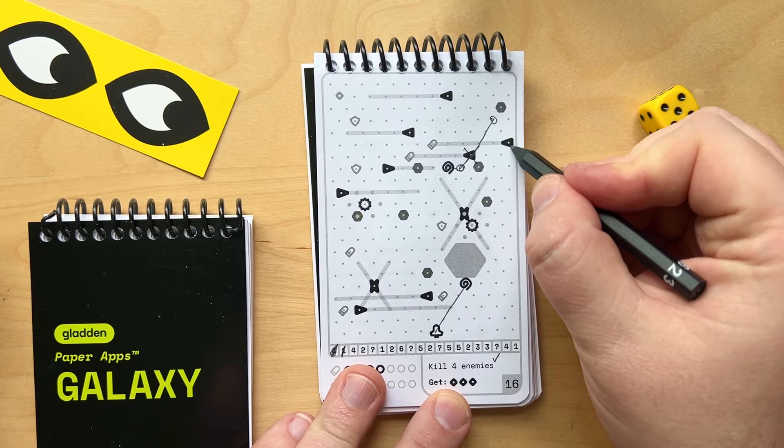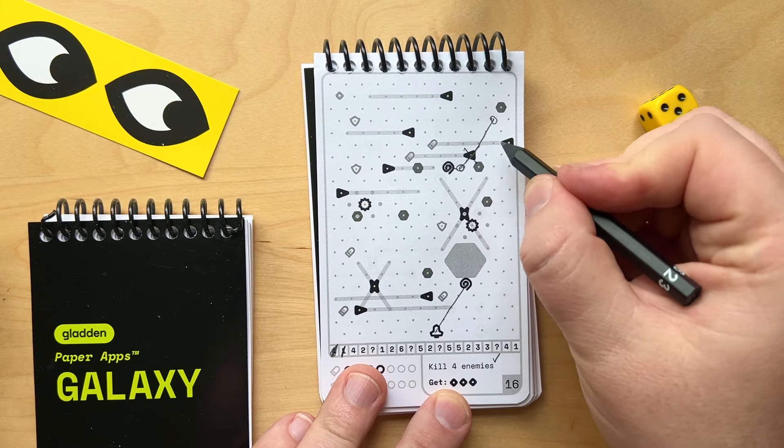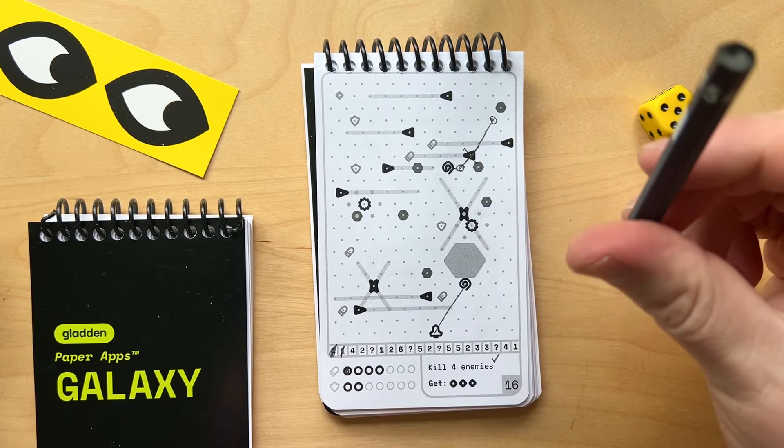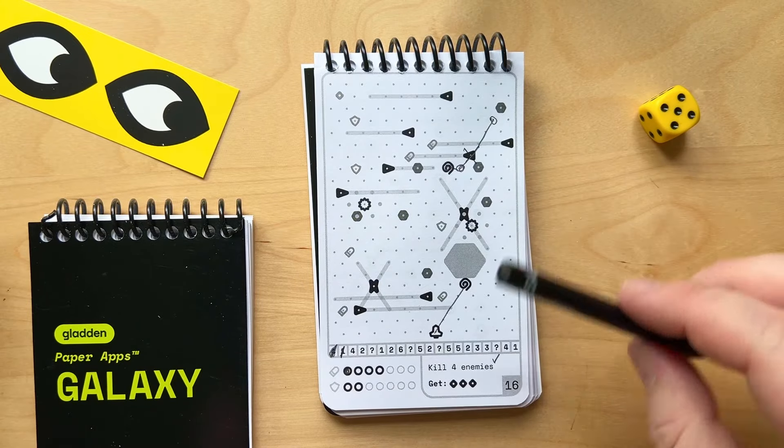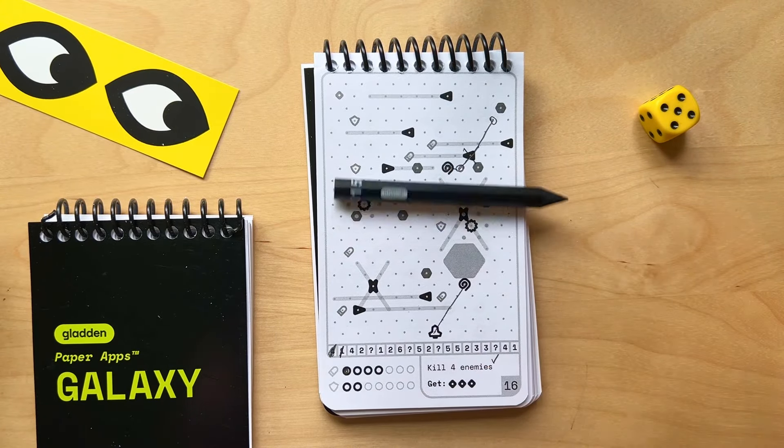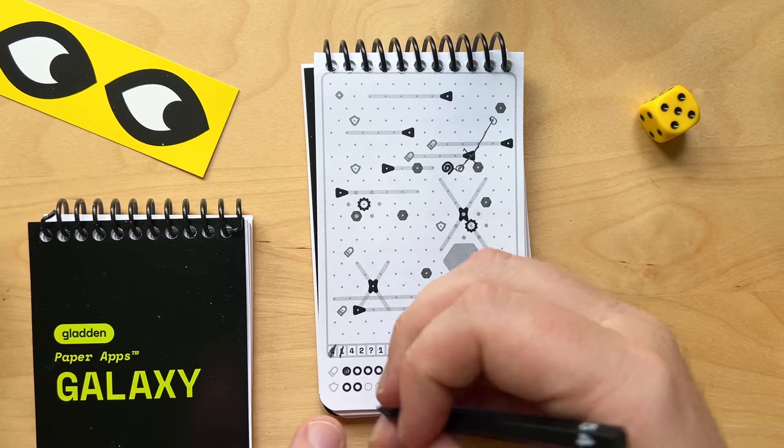But I did pass through the range of this enemy ship. One, two. Two spaces away. So I'm going to need to roll for that ship. If it rolls a two or higher, it hit me. It rolled a two, so I lose a shield.